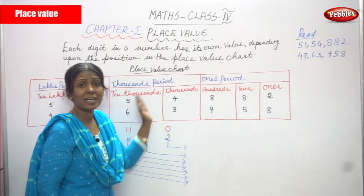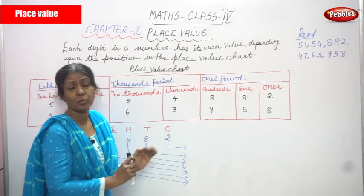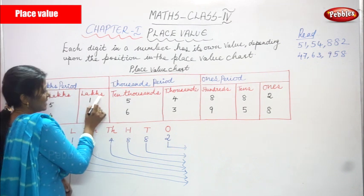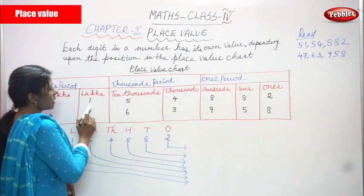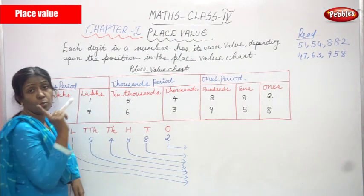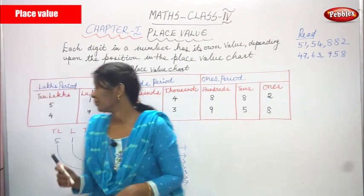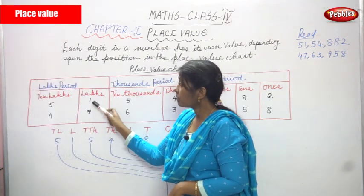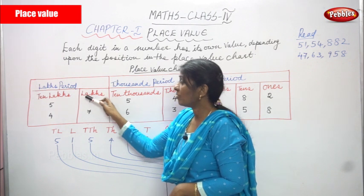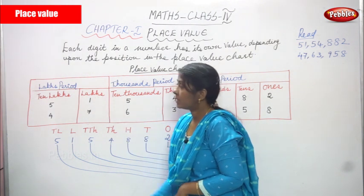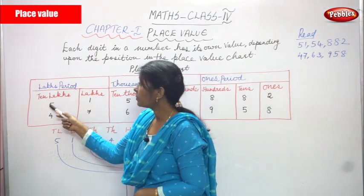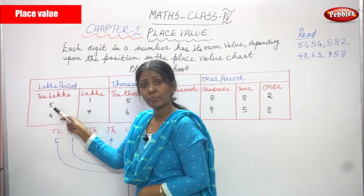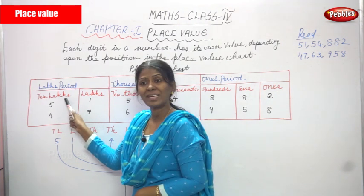This is the method of place value. In the lakhs place, the number is 1 - so 1 is in the position of lakhs in the place value chart. In the ten-lakhs place, the number is 5 - so 5 is in the position of ten-lakhs.